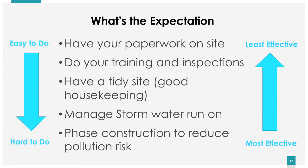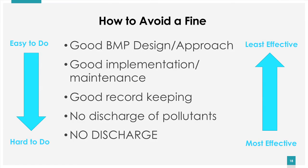The most effective things are always the hardest to do — like minimizing your pollution risk by doing phasing and managing stormwater. Ultimately, if you want to avoid a fine, just don't discharge. If you do discharge, make sure you're discharging only stormwater, that you've maintained proper documentation, and that you've implemented good BMPs.